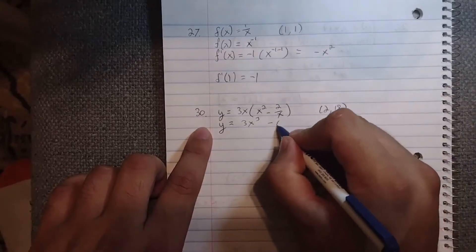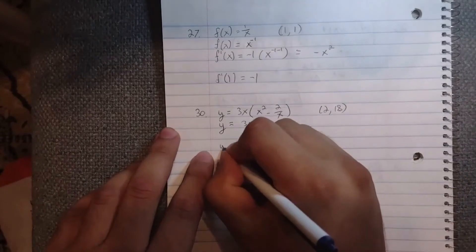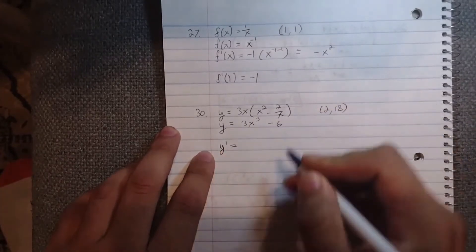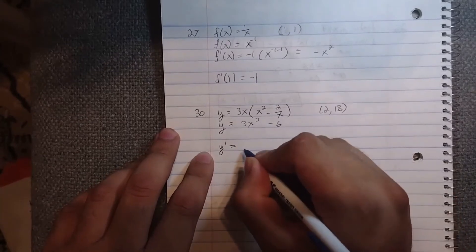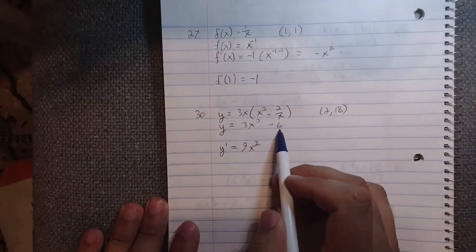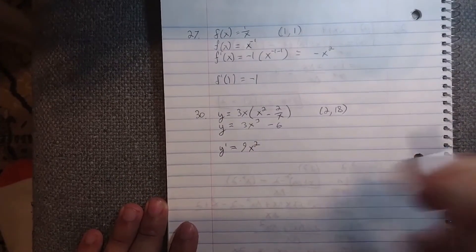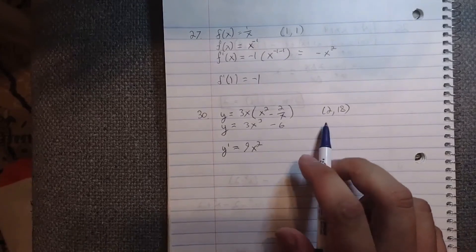Now we need to take the derivative. y' equals—apply the power rule again—the 3 comes down and multiplies, that becomes 9, and this is x². The derivative of a constant is 0, so it's just 9x².